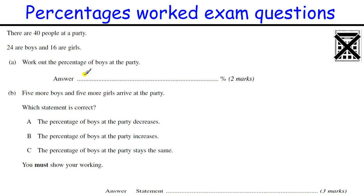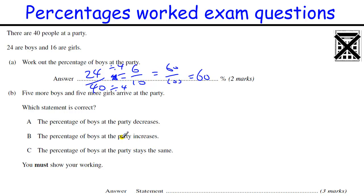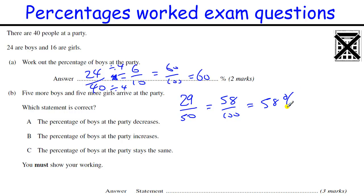What's the percentage of boys at the party? 24 out of 40 gives you one mark. Make it out of 100: divide by 4 top and bottom to get 6 out of 10, which is 60 out of 100, or 60% — two marks. Then five boys and five girls are added. Now we've got 29 boys out of 50 people, which is 58 out of 100, or 58%. So the percentage has decreased.